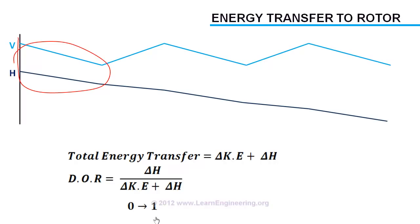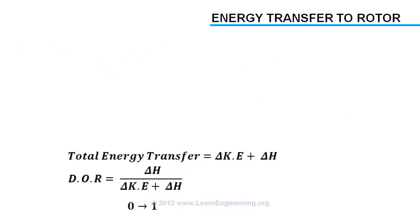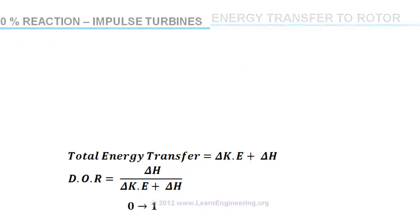Suppose for a turbine degree of reaction is zero, then such turbines will be known as impulse turbines, or zero percentage reaction turbines. In such cases enthalpy energy change across the rotor will be zero, and energy transfer will be purely due to kinetic energy change.